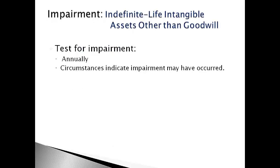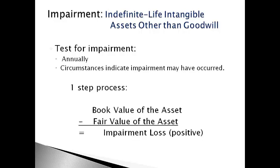Intangible assets with an indefinite life other than goodwill, such as purchased research and development, are tested for impairment annually or when circumstances indicate impairment may have occurred. A one-step process is used, and the book value of the asset is simply compared to the fair market value. An impairment loss occurs when book value is greater than fair market value.